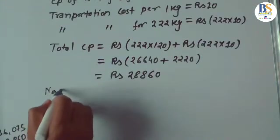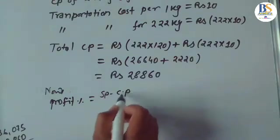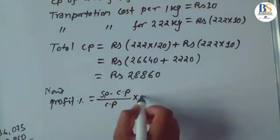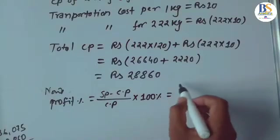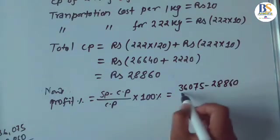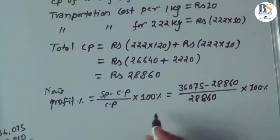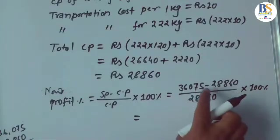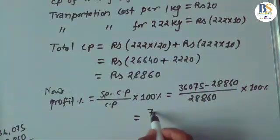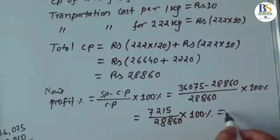Profit% = (SP − CP)/CP × 100% = (36,075 − 28,860)/28,860 × 100%. The difference is 7,215 divided by 28,860 × 100% = 25%. The required answer is 25%.